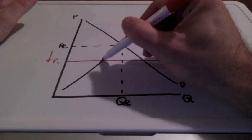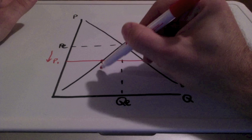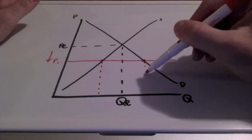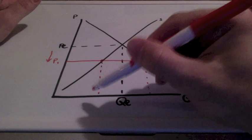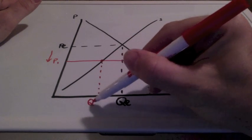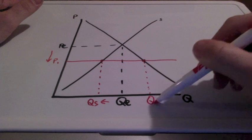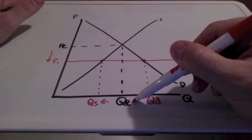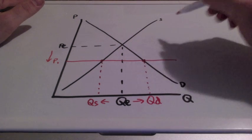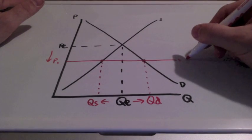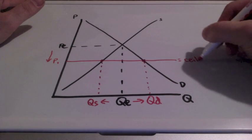And we know when price goes down, quantity supplied will go down and quantity demanded will increase. This line is called a price ceiling.